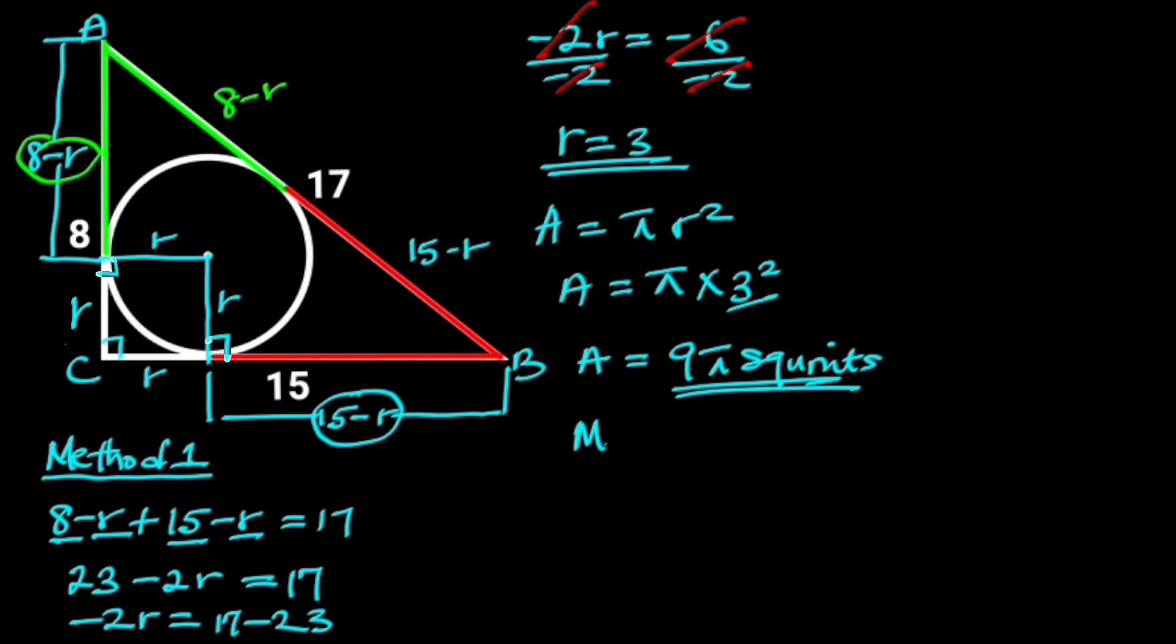Second method. The radius of the inscribed circle is determined by dividing the area of the triangle by its semi-perimeter. That is, radius is equal to area of the triangle divided by the semi-perimeter. The area of a triangle is given as 1 over 2 times base times height, where the base of the triangle is 15 units and the height 8 units.